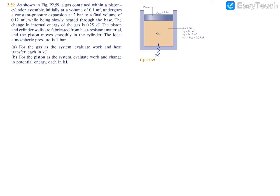Here we have a piston-cylinder assembly with some givens for the gas inside. The piston is sealing off the chamber and will travel upwards because the gas expands. We have an initial volume of 0.1 meters cubed expanding to 0.12 meters cubed. This is a constant pressure expansion from process one to two, meaning P1 equals P2 and V2 is greater than V1.